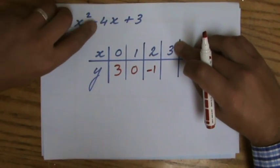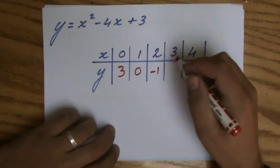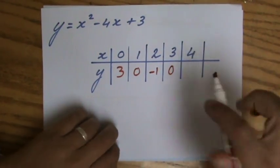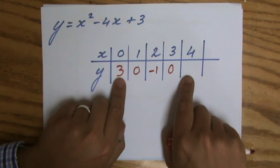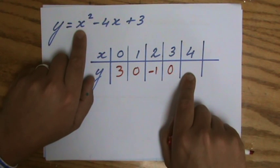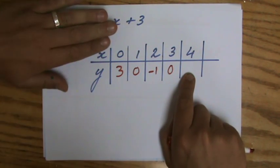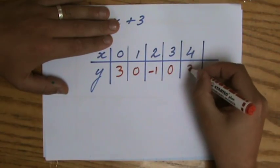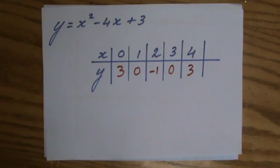3 squared is 9, minus 12, 4 times 3 is minus 3, plus 3 is going to be 0 again. Hey, I see some symmetry here. So I'm expecting the 4 to be a 3. Let's see if that's true. 16, 4 squared, minus 4 times 4, so minus 16. That is 0, plus 3 is 3. Fantastic. You see, I even see the symmetry in my table of values.